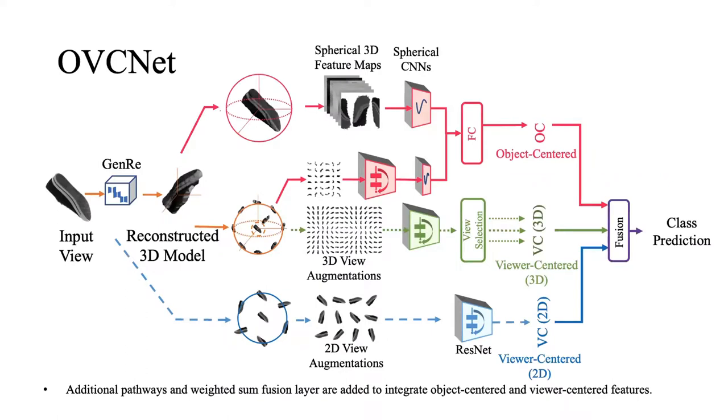There are two fusion parts that combine the viewer-centered and object-centered representations. To fuse the three branches, we have explored three options, including attention, fully connected layer, and the weighted sum from a grid search based on a validation set.